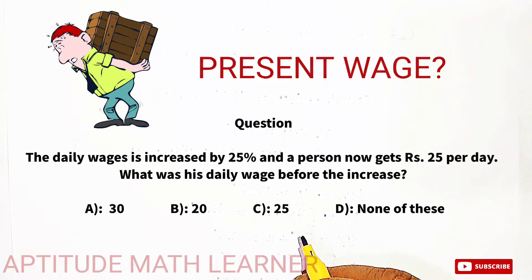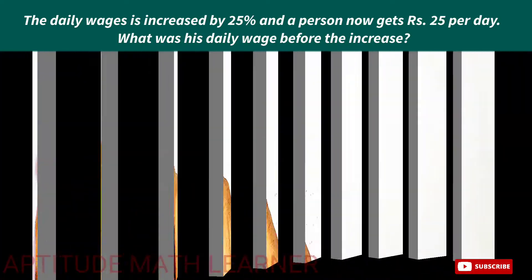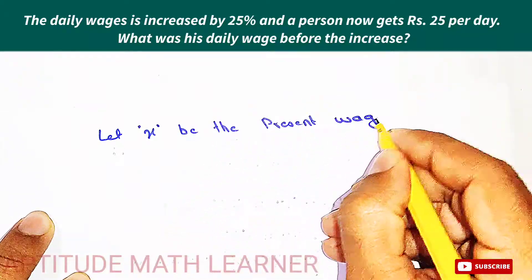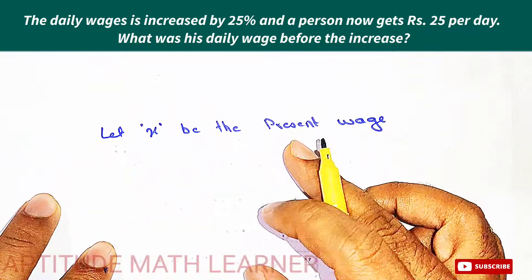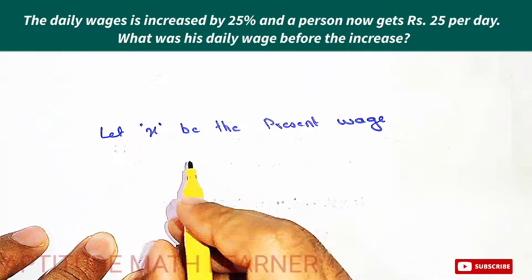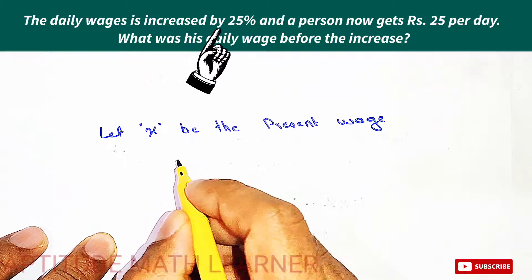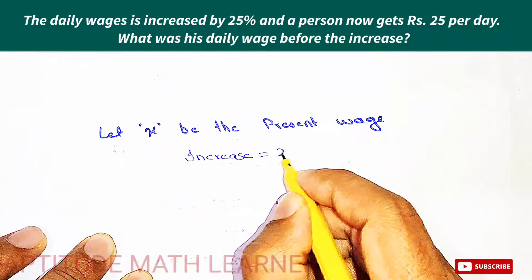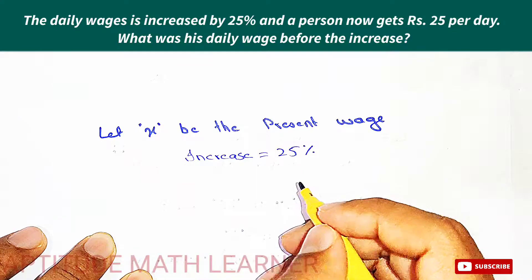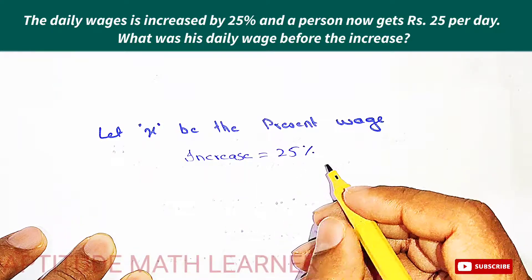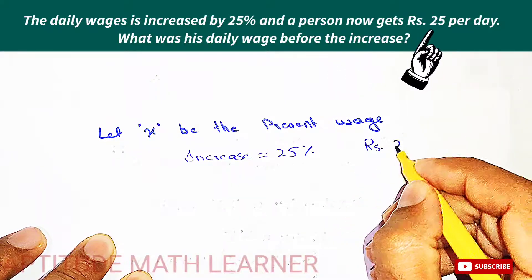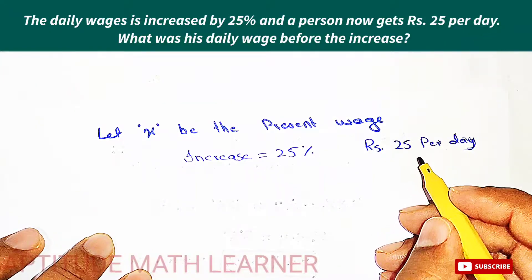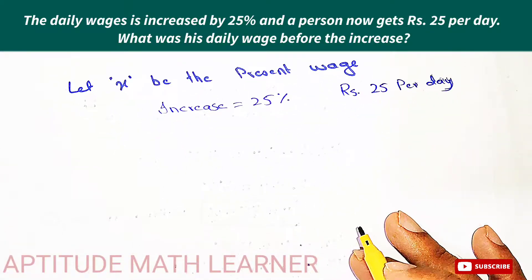We have to find out his daily wage before the increase. For this, we let x be the present wage of a person. After the increase of 25 percent, he gets rupees 25 per day. So 25 percent is the increase, and rupees 25 per day is the amount after that increase.